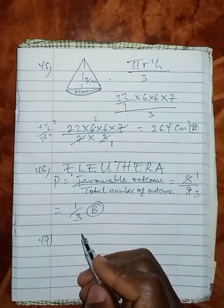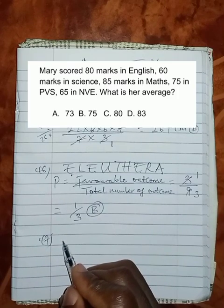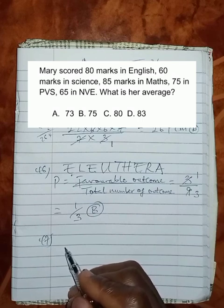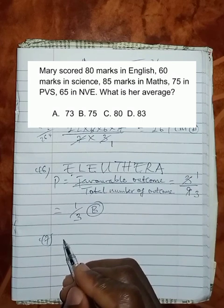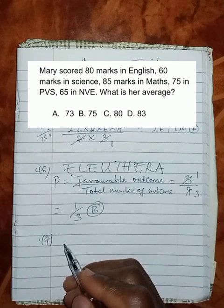Question 47 says, Mary scored 80 marks in English, 60 marks in Science, 85 marks in Maths, 75 in PVS, 65 in NVE. What is her average mark? Average would be the sum of all her marks divided by the total marks presented.